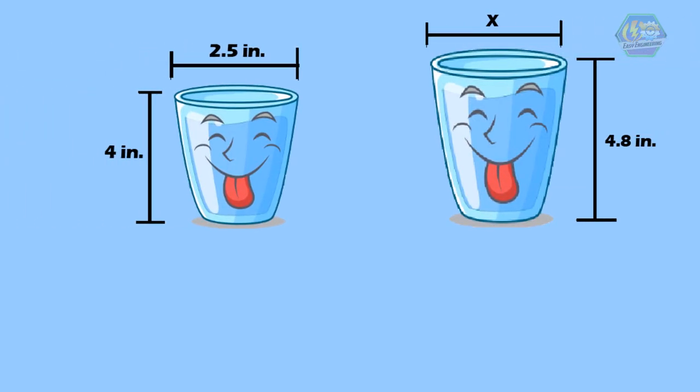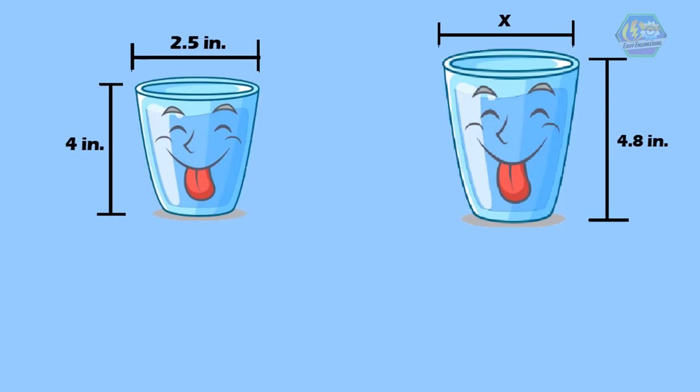Now, for another example. Suppose these two glasses are proportion. Find the width of the glass. Let's combine first the length of the glasses on the right side and the width of the glasses on the left side. The equation will look like this.